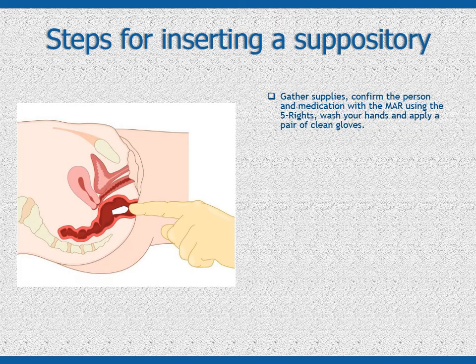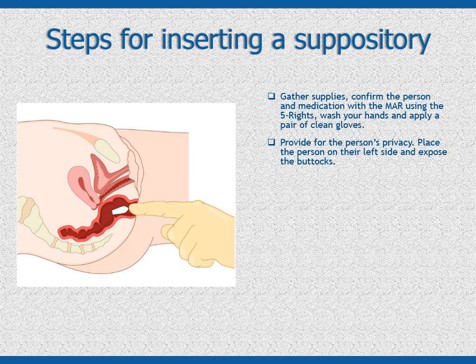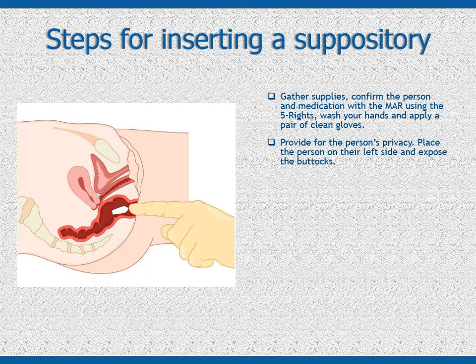Always use the 5 rights plus 2 each and every time you administer or supervise the self-administration of medication. Wash your hands and apply a pair of clean gloves. Cover the person with a sheet for privacy and have them lower their pants and undergarments. Assist if needed, and only expose the buttocks. Place the person on their left side with their left leg straight. The right leg should be bent at the knee and moved towards the upper body. This is called the SIMS position.